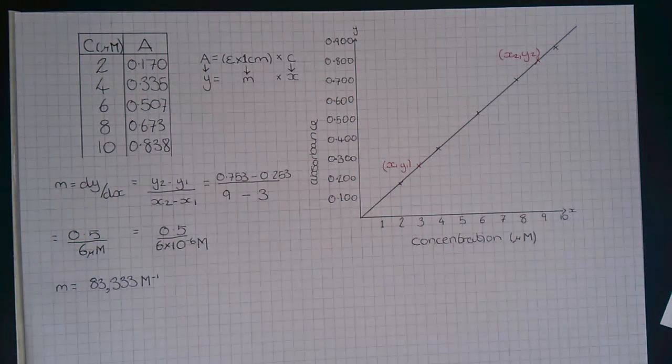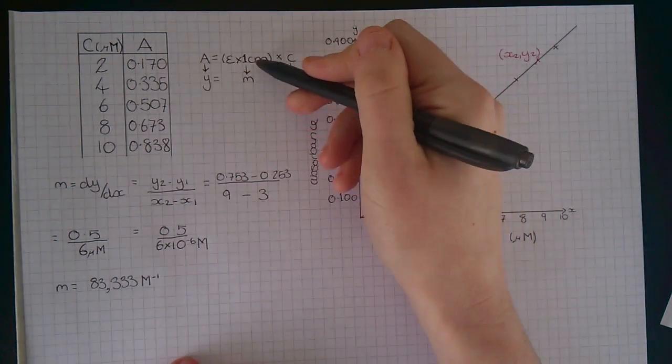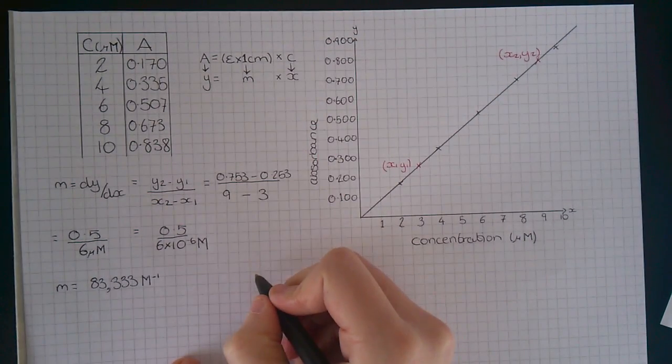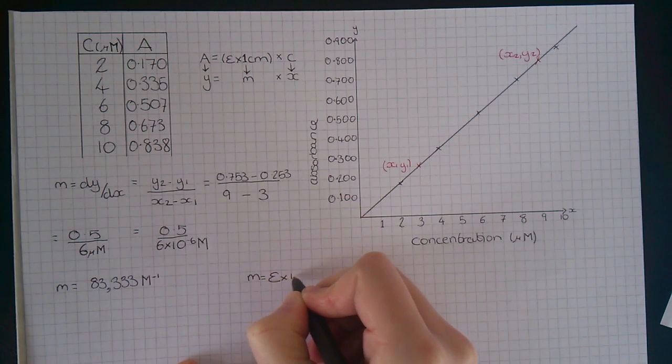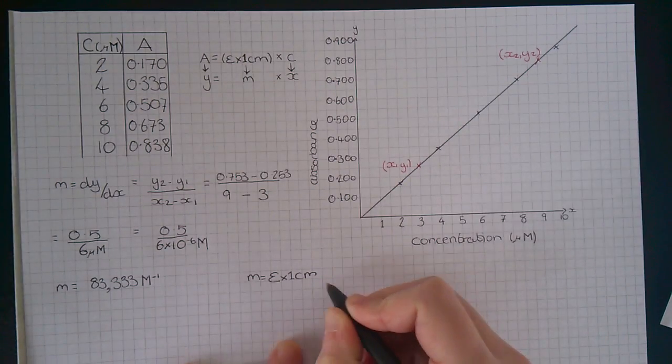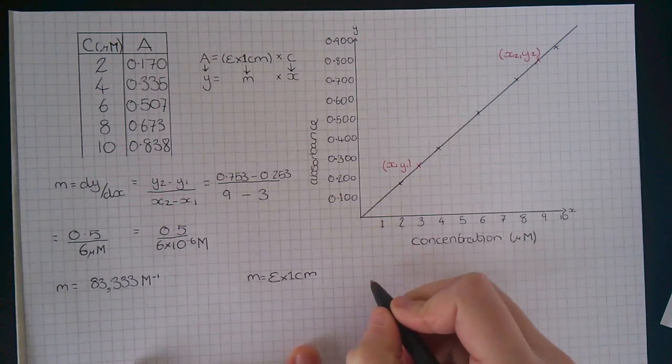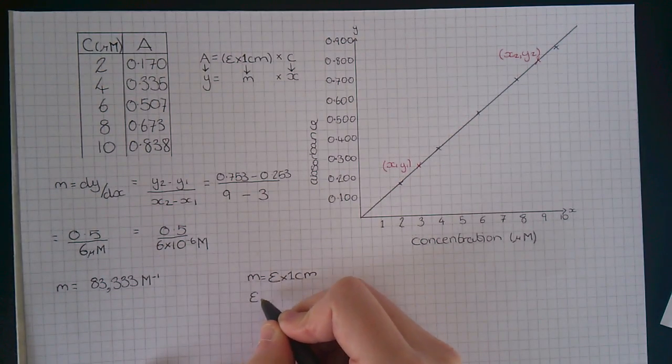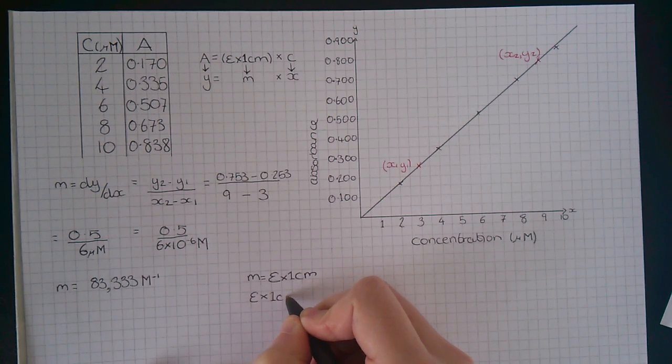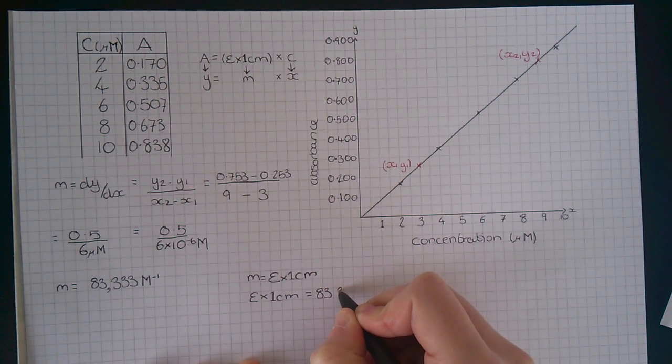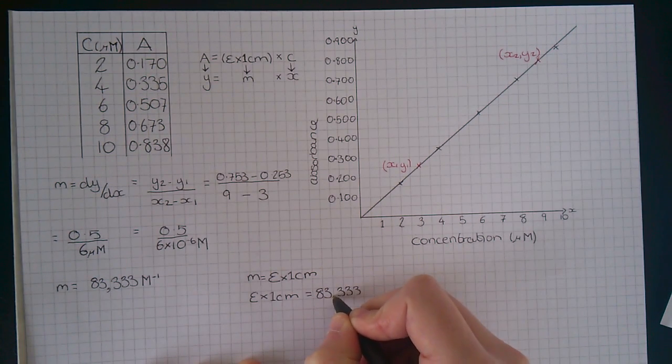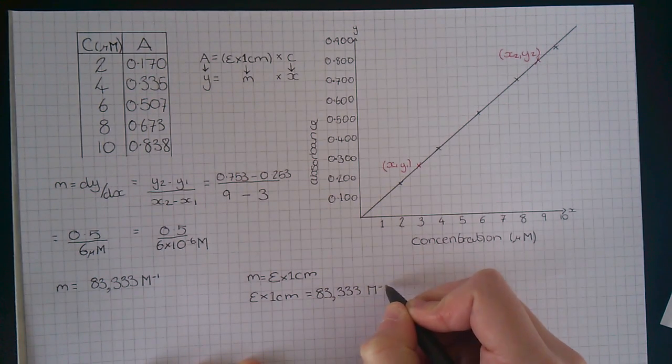As we said before, m equals epsilon times 1 centimeter. This means that epsilon times 1 centimeter equals 83,333, with units of per molar units to the minus 1.